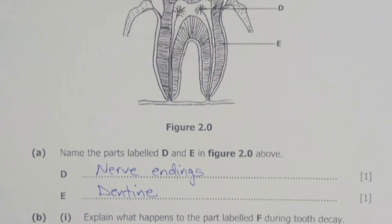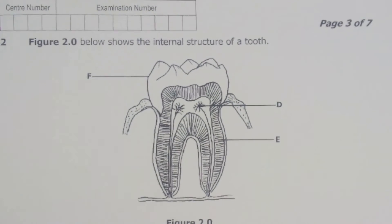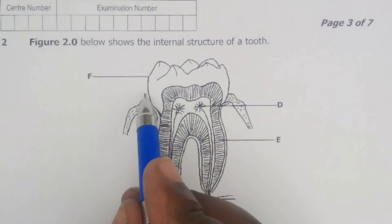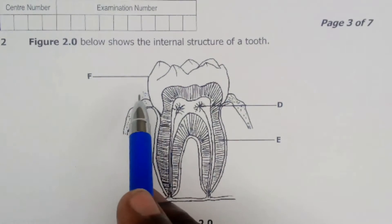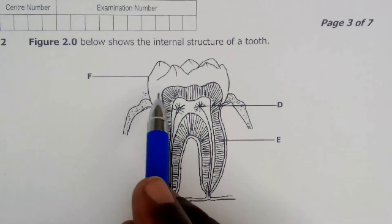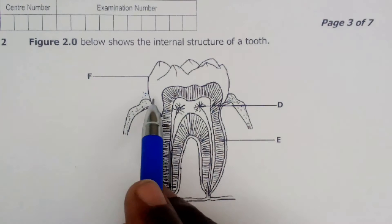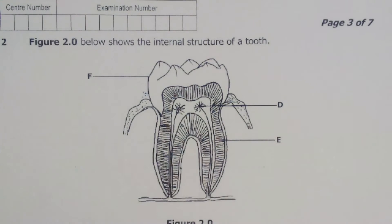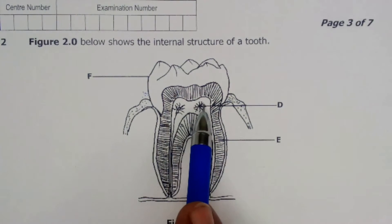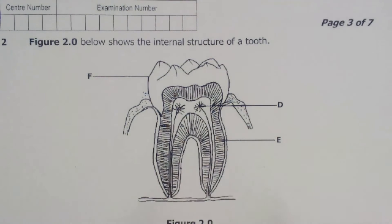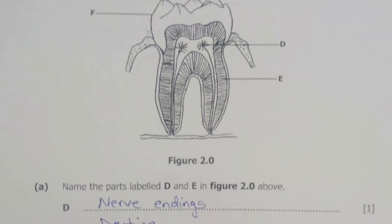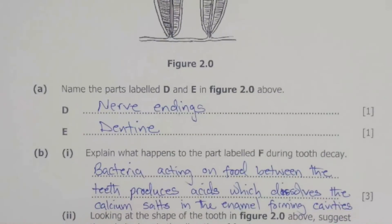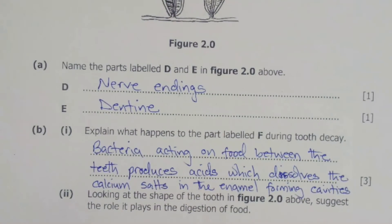When we have leftover food between the teeth, bacteria will start producing acid. That acid will dissolve the calcium salts inside the enamel, hence forming cavities which dig through the tooth until reaching the pulp cavity. Once the acid exposes the nerve endings, the tooth will start experiencing pain. That is how tooth decay occurs, and that was the solution to question B1.